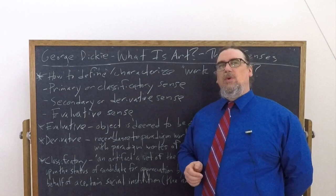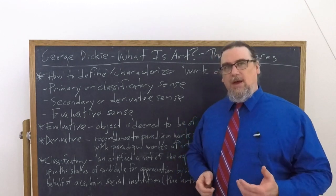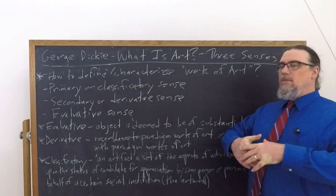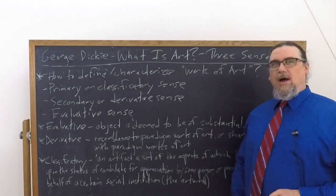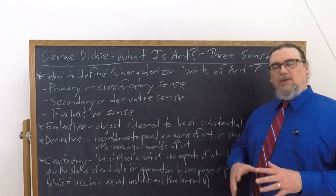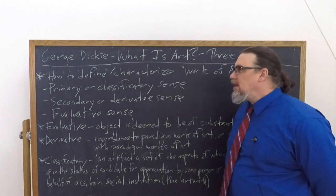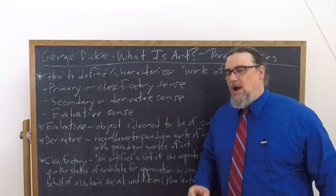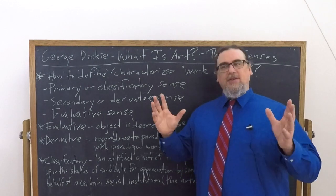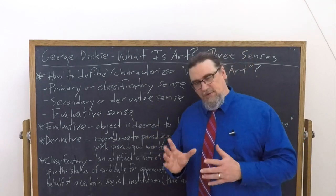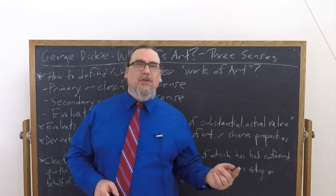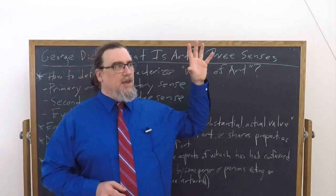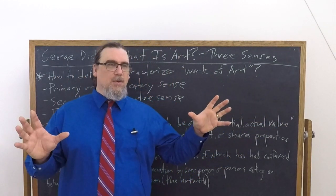The secondary or derivative sense is another way of understanding what people mean when they talk about something being a work of art — a looser way of calling something art that would fit under the umbrella of the secondary or derivative sense. And then, finally, we have what he calls the evaluative sense. There are a lot of cases — not just in art, but in terms of all sorts of other things — where people mix up the primary sense of a term with an evaluative sense of the term. I've seen it recently in terms of talking about who counts as a philosopher.